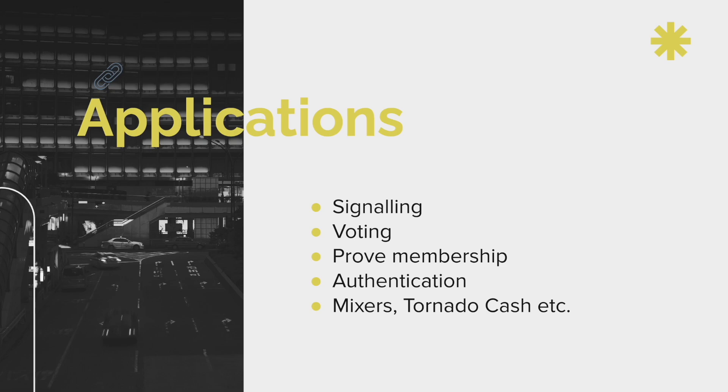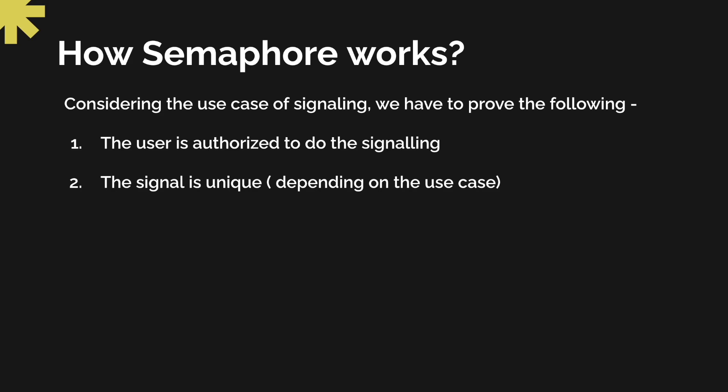There is already a separate video for Tornado Cash. Now let's understand how semaphore works, considering the use case of signaling. In the case of signaling, a user will have to prove that they are authorized to do the signaling, and that the signal they are trying to send is unique and can only be done once.